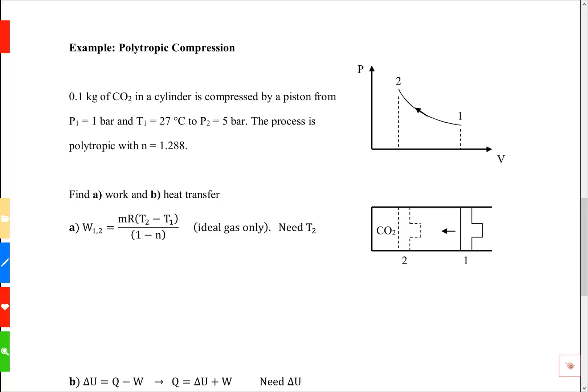In this example, we're given CO2 in a cylinder compressed by a piston. Here's the cylinder, here's the trapped gas, and the piston starts at state one and moves to state two compressing the gas. We're told that initially the pressure is one bar and the temperature is 27°C, and the final condition is five bar.